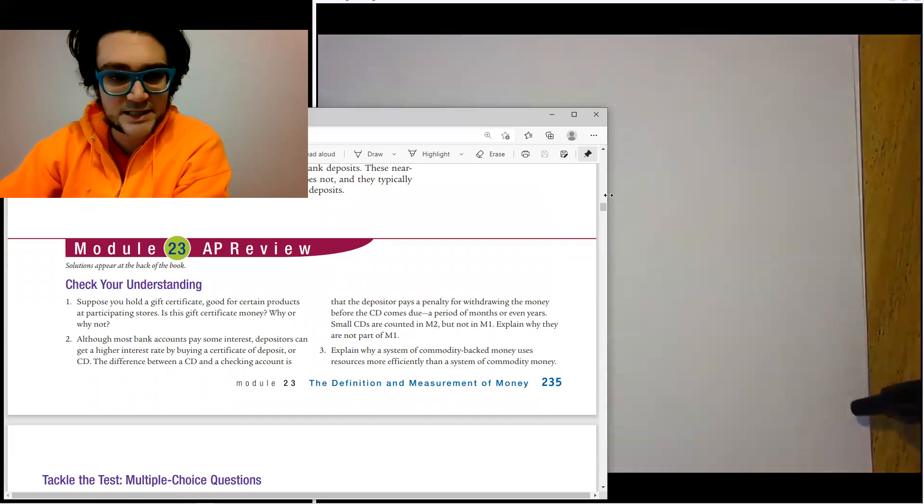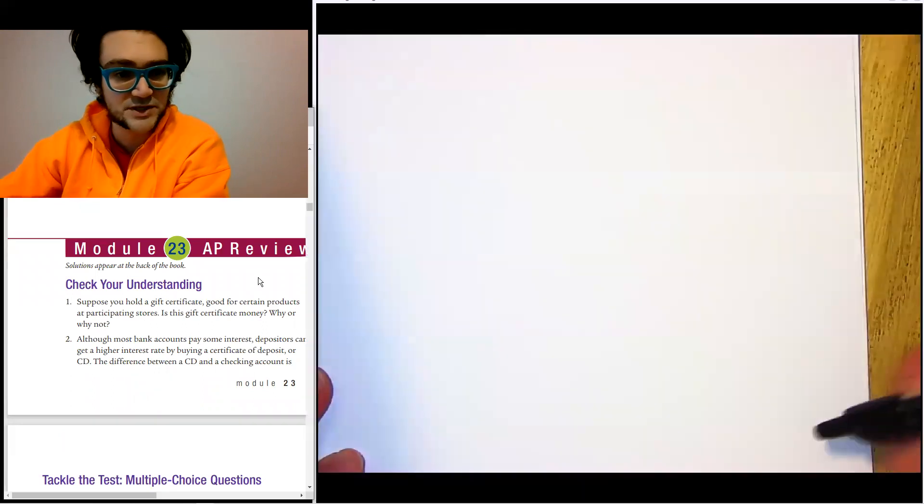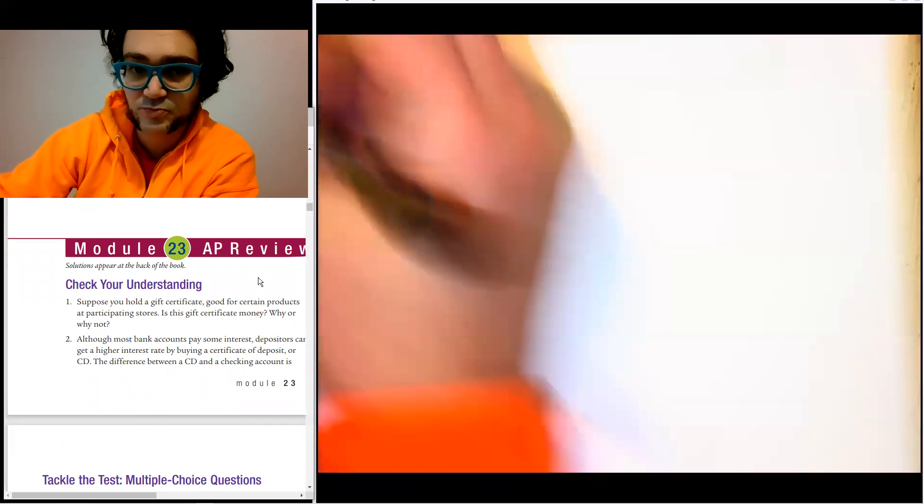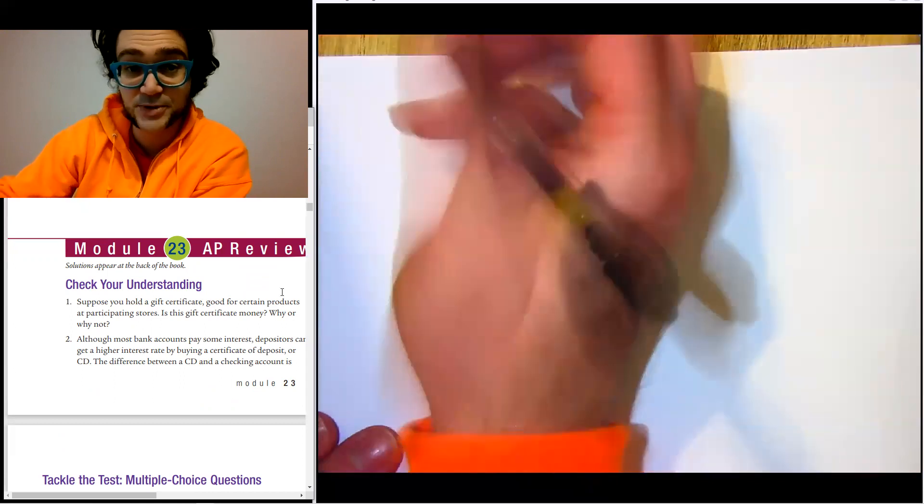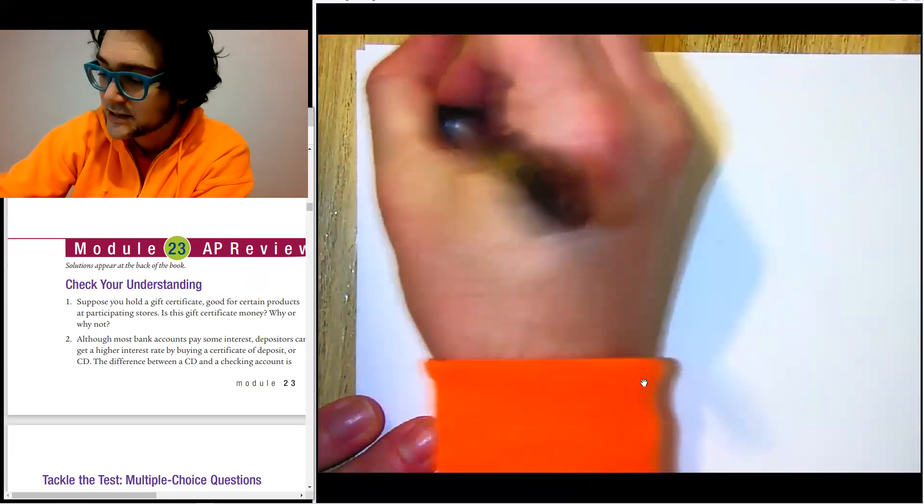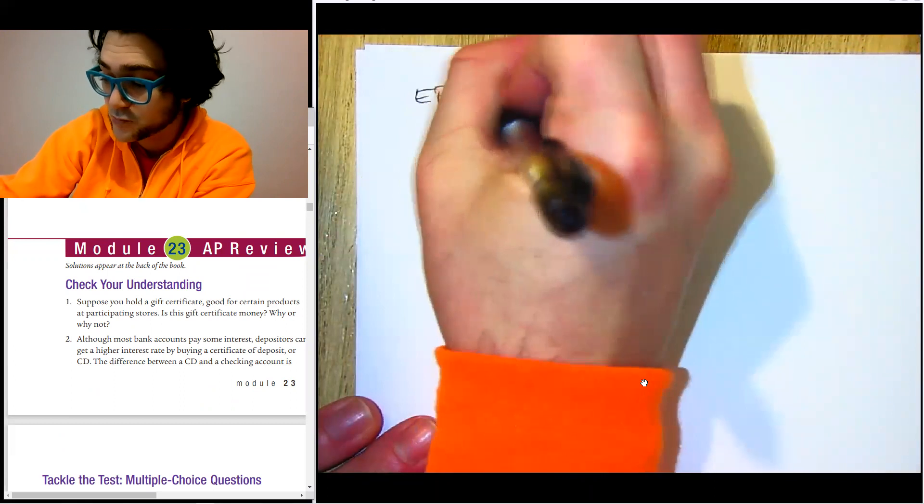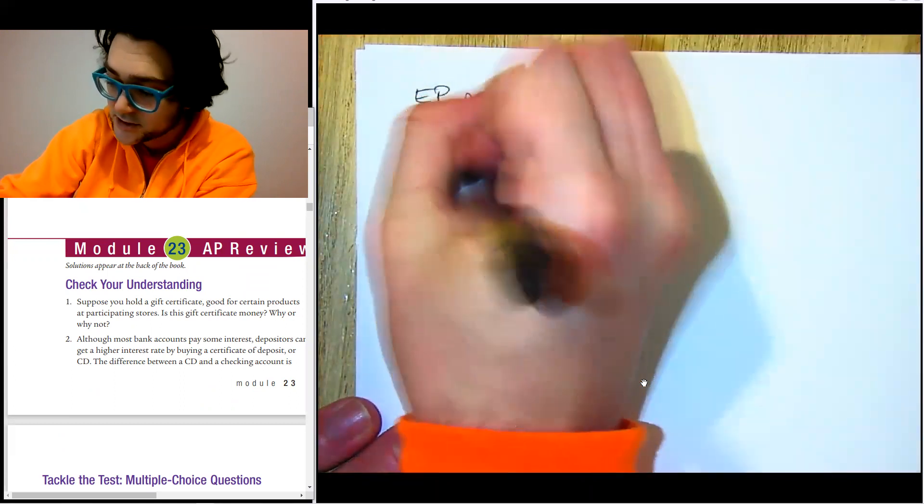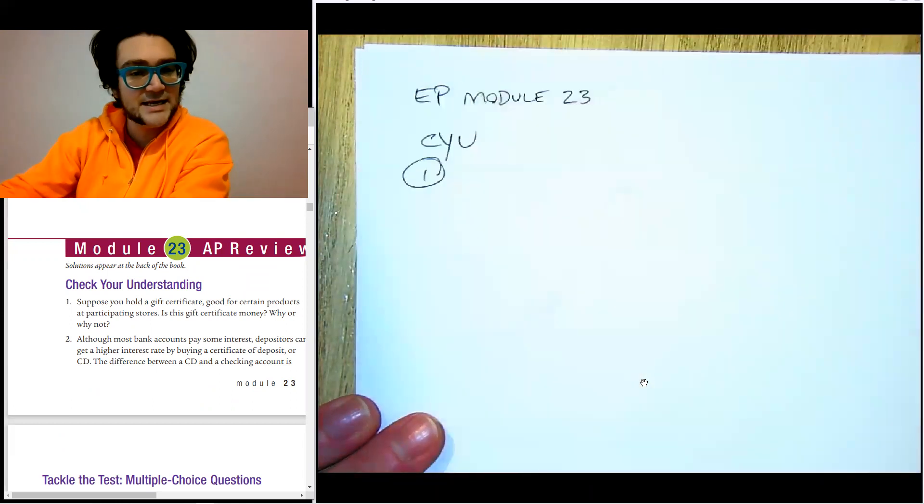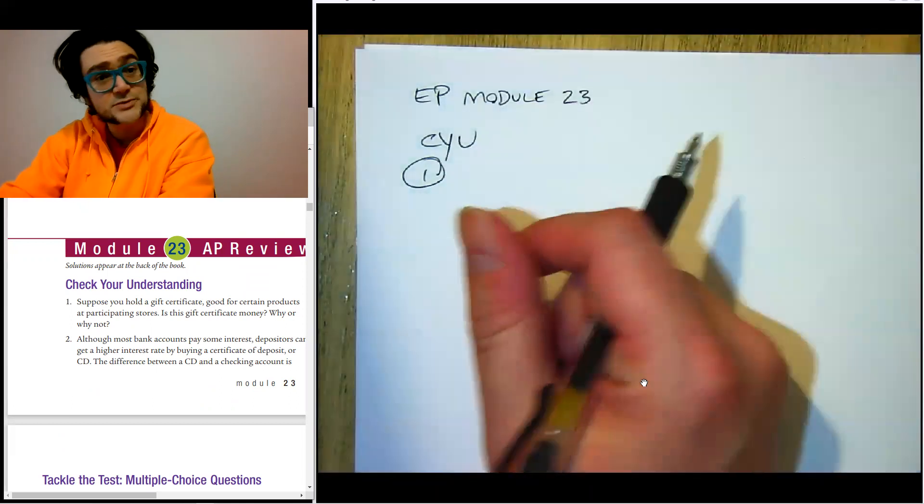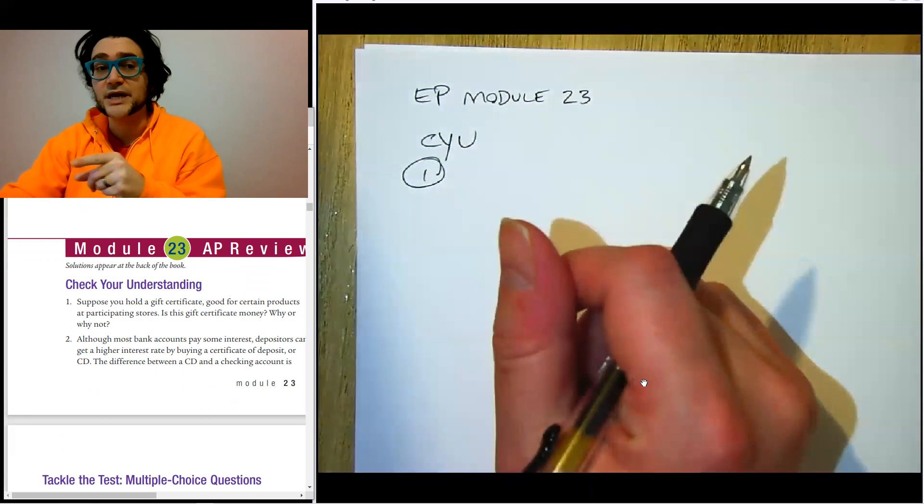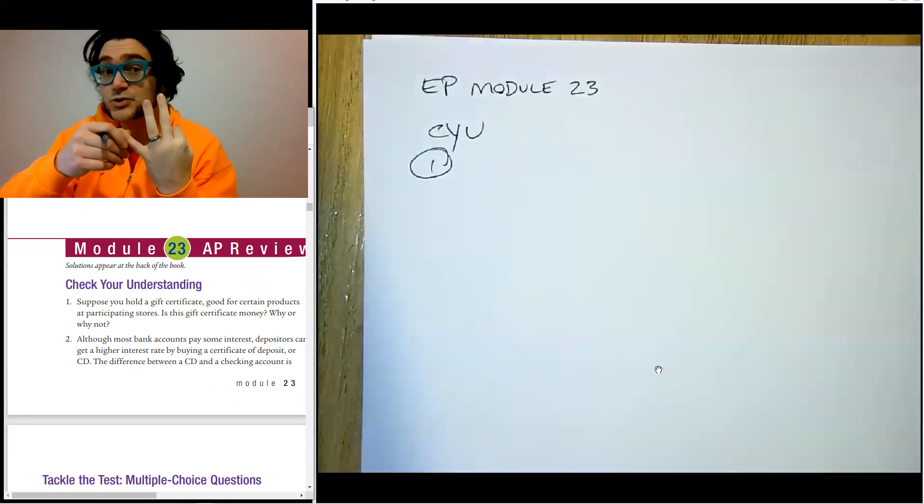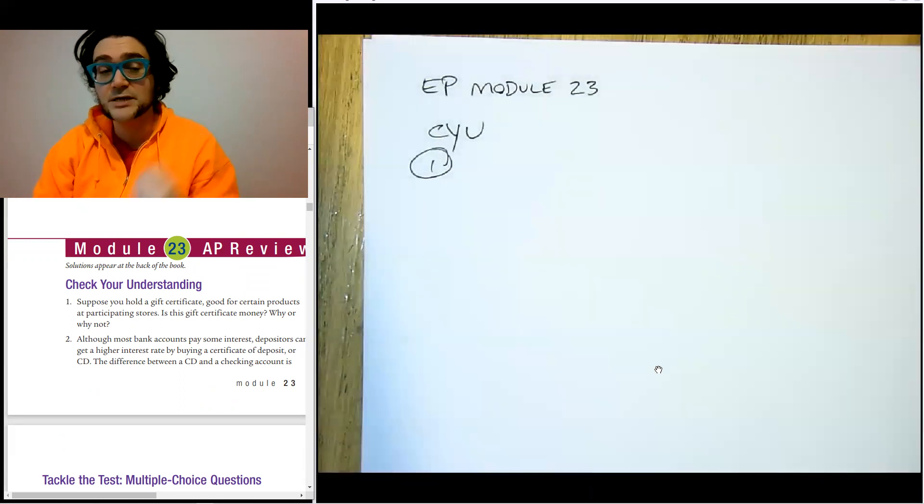So first it says, suppose you hold a gift certificate, good for certain products at participating stores. And then it asks, is this money? Why or why not? So extra practice, module 23, check your understanding number one. And I'm going to ponder this one with you for a moment. Think about, is it really money? And money is three functions, store of value, unit of account, and medium of exchange.